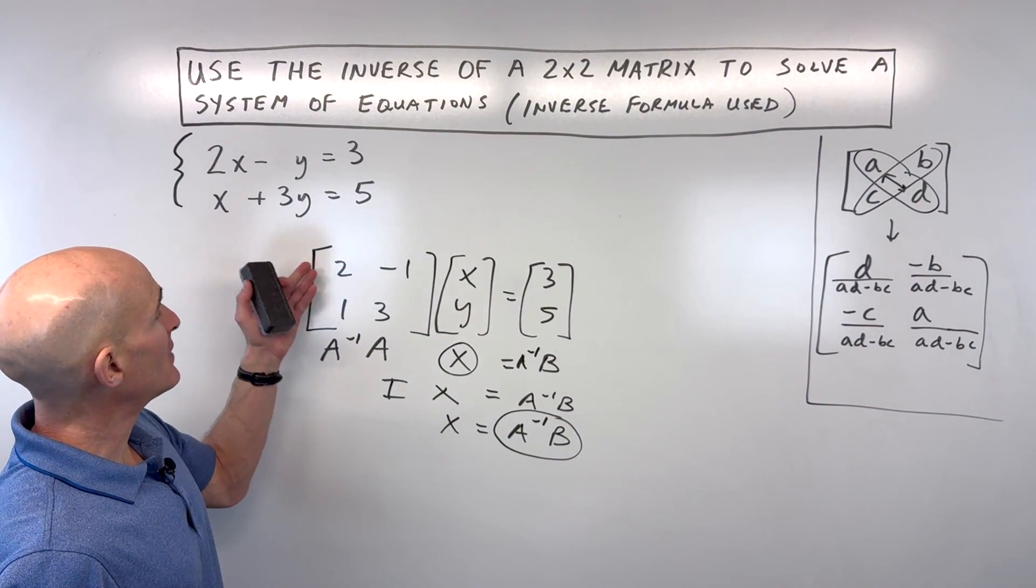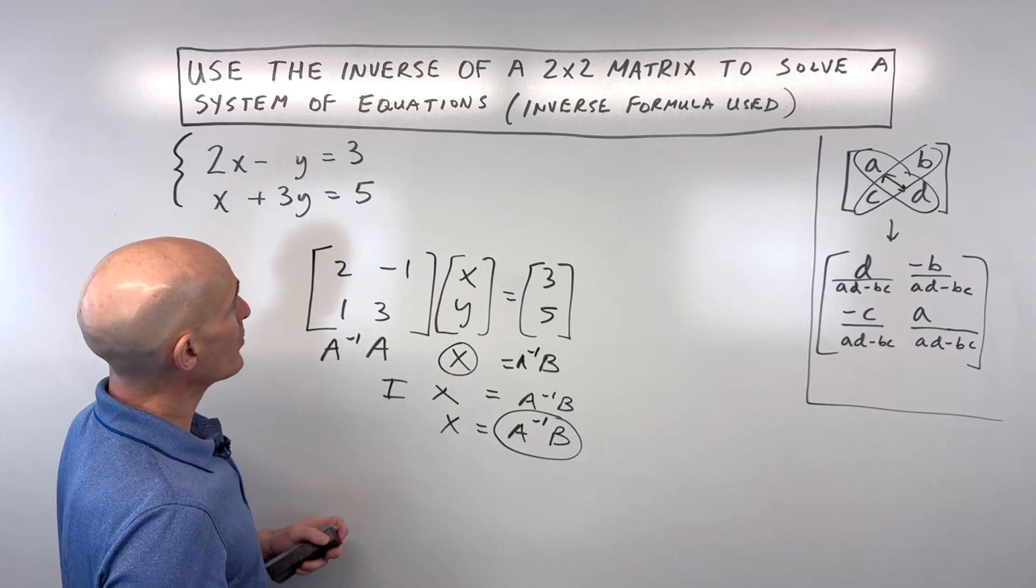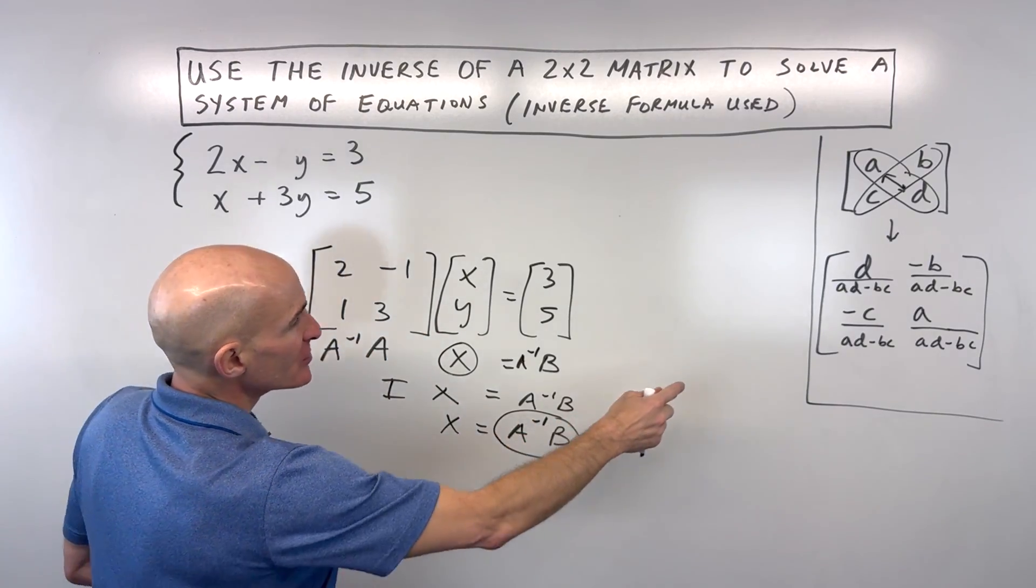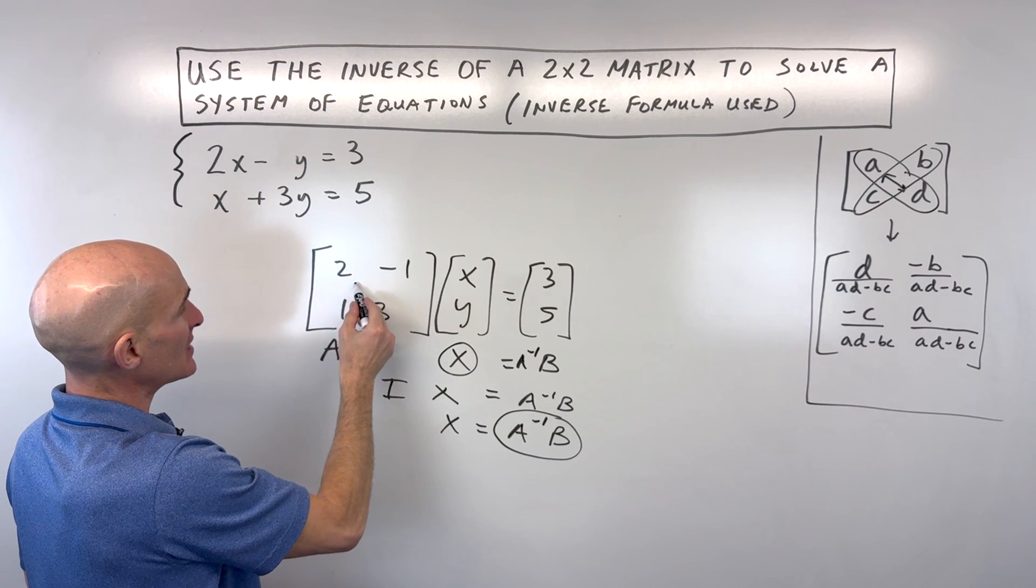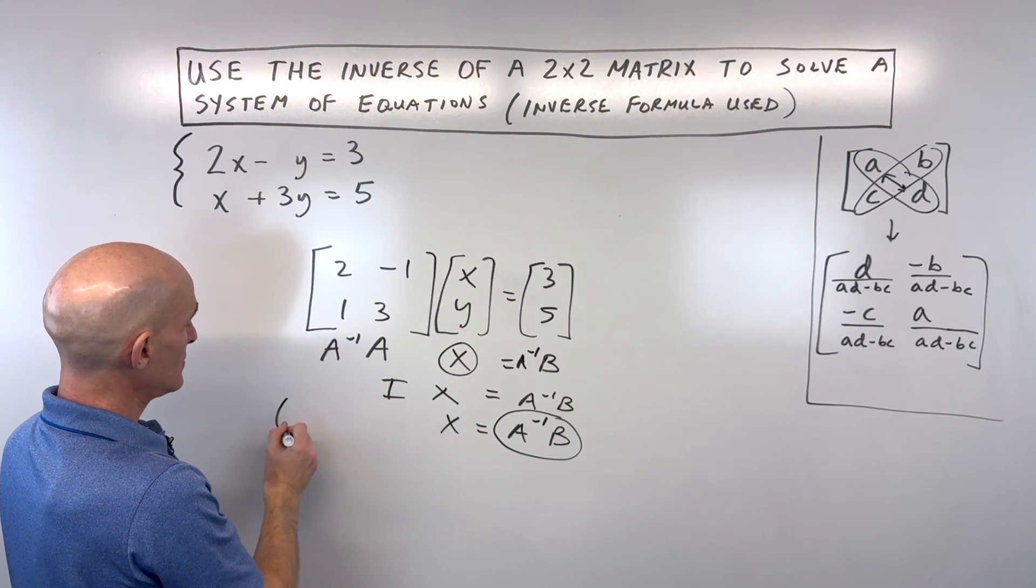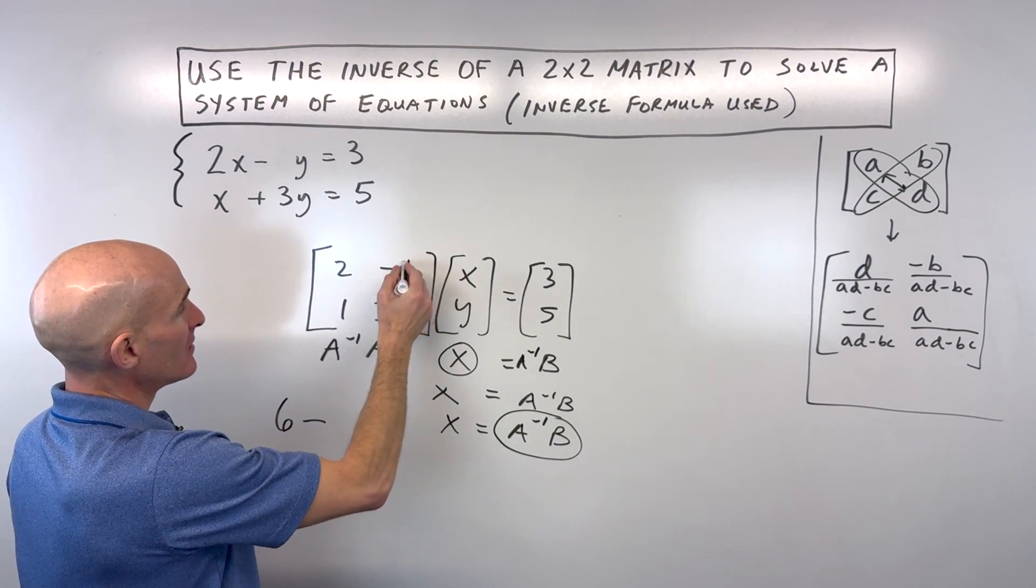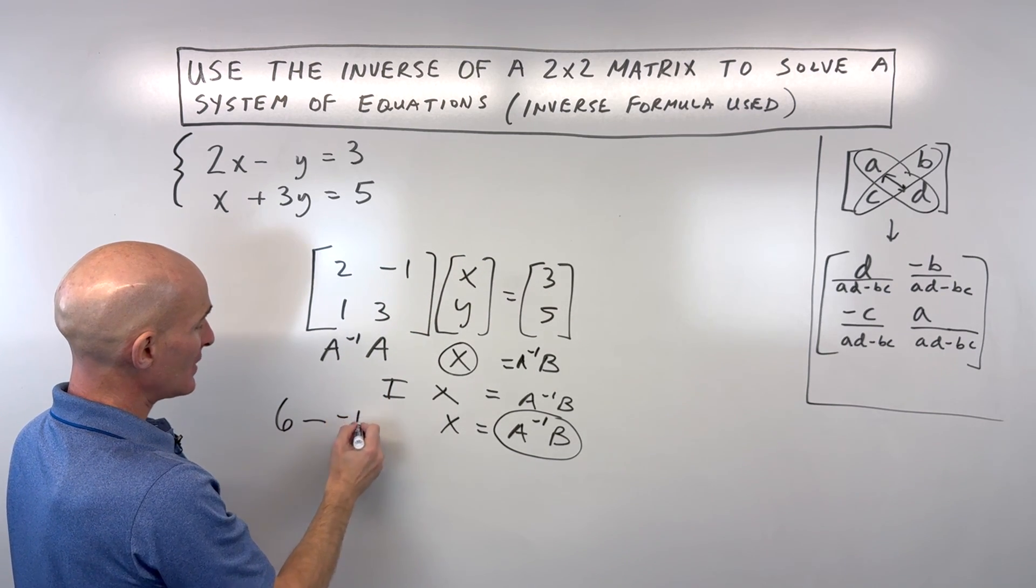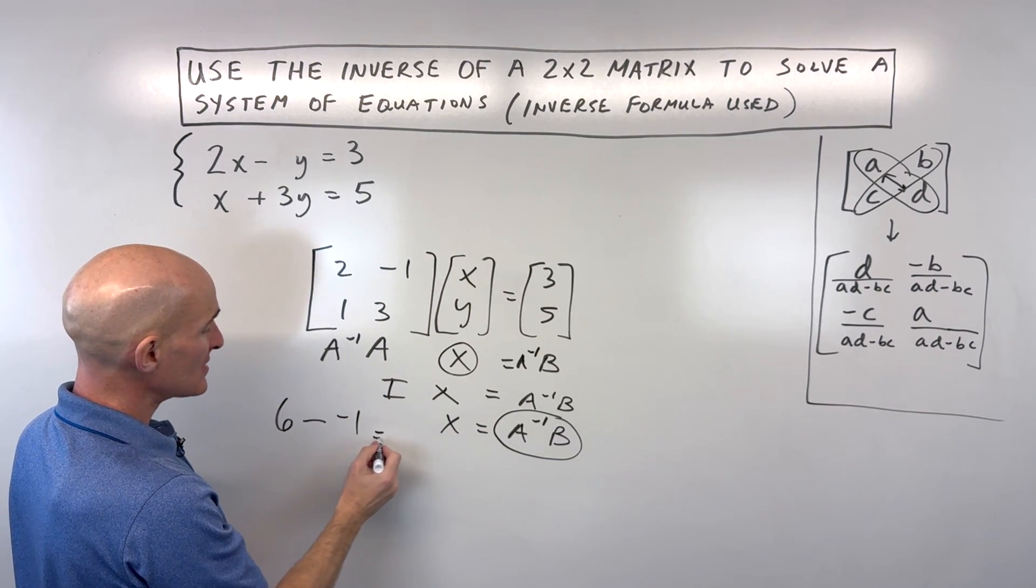So let's go ahead and find out the inverse of this matrix right here. So what we're going to do is, let's figure out what the determinant is here first, the AD minus BC. So I say 2 times 3 is 6, minus negative 1 times 1, which is negative 1, 6 minus negative 1 is equal to 7.